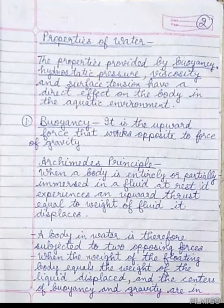Next we will discuss the properties of water. The properties provided by buoyancy, hydrostatic pressure, viscosity, and surface tension have a direct effect on the body in the aquatic environment.